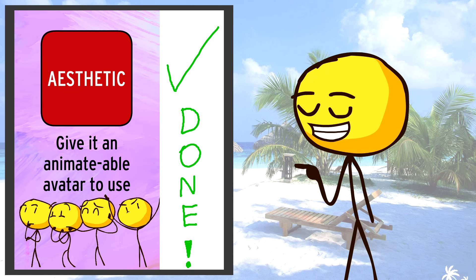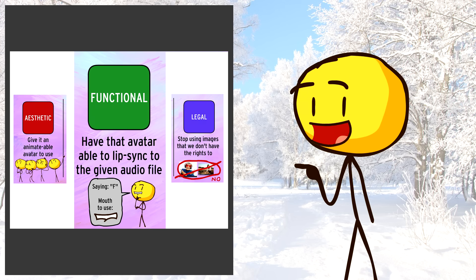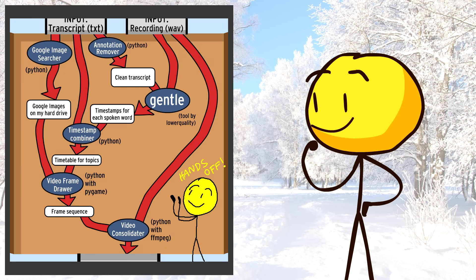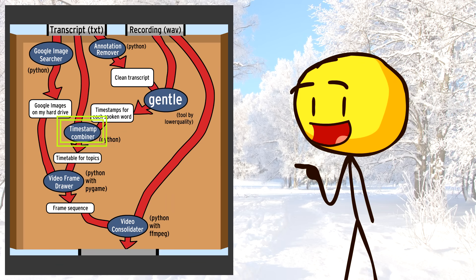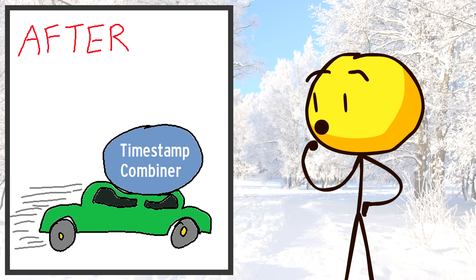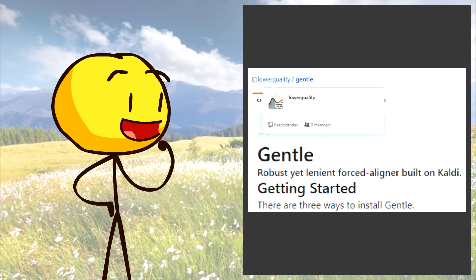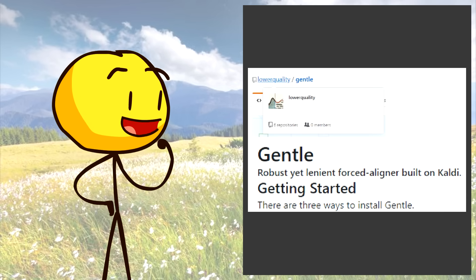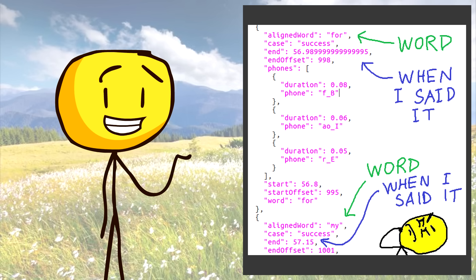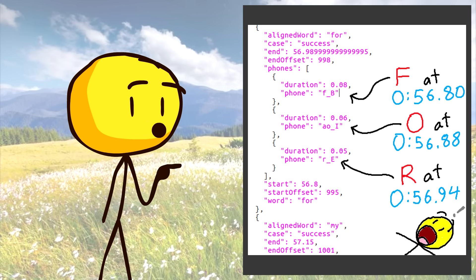So that's all we have to do regarding aesthetics. On the functional side of things, let's open the machine up again. I want to leave most of these components as they are, but we will have to overhaul this timestamp combiner. Well, let's figure out what it used to do and figure out what I'd rather have it do instead. Originally, a tool called Gentle would listen to the audio file and give us the timestamps of when I said every word of the transcript. It doesn't just give timestamps of the spoken words — it also gives timestamps of every single phoneme as well.